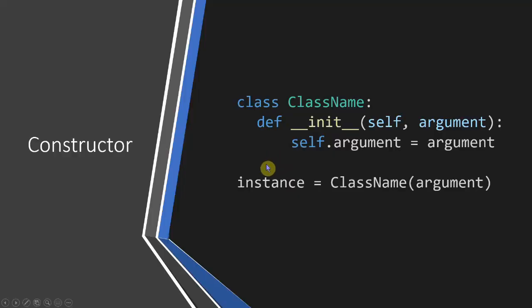So as you can see there's a lot of new stuff here. First you've got the class keyword, which says you're defining a class in the same way that 'def' says you're defining a function. Then we've got this init statement, and that just means that when you create a class this runs — and you can't stop it from running, it will always run. Then in every function or method you create, you have this 'self' keyword, which refers to the class itself and you can't leave it out. And then you have arguments, although they're not necessary, same as with every other function.